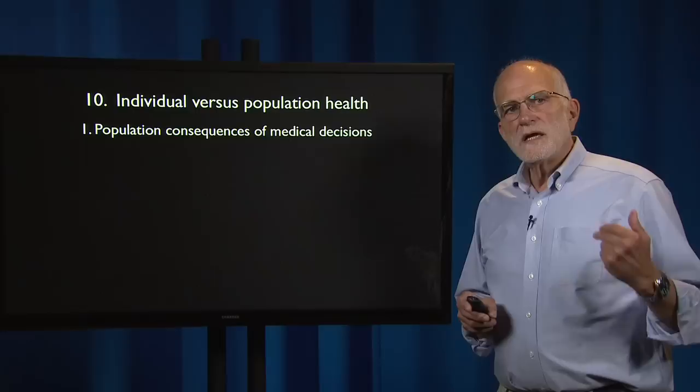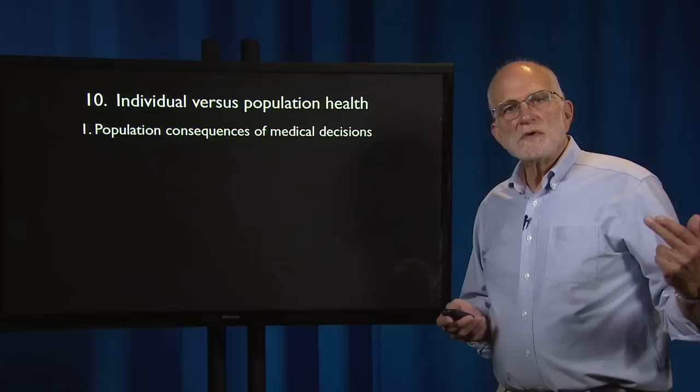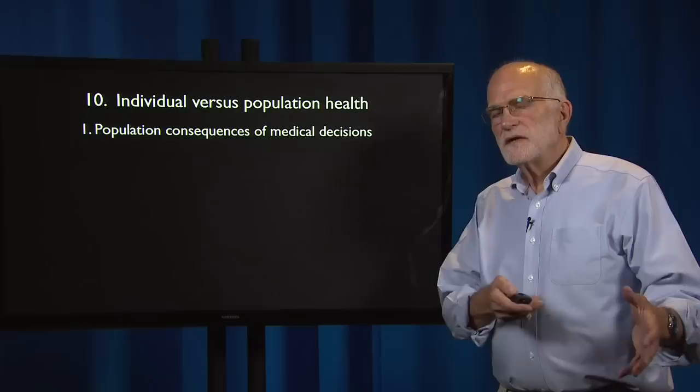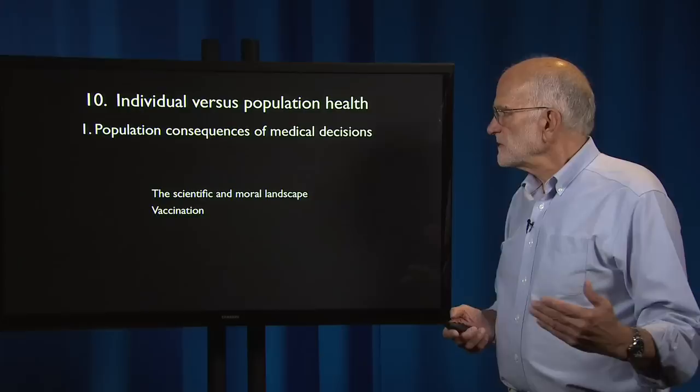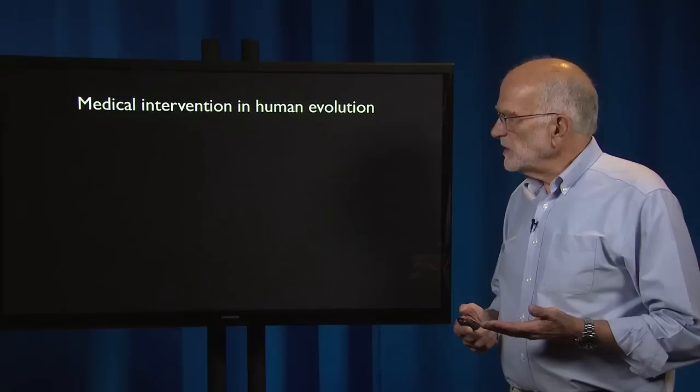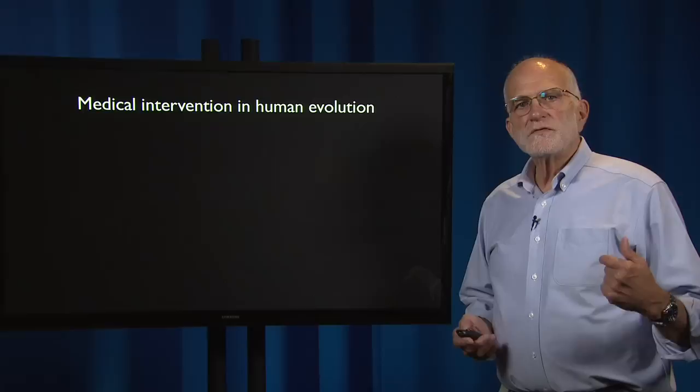Let's now take a look at what happens when hundreds, thousands and millions of people make decisions that have medical consequences and those add up to have impact at the level of the entire population. This exposes the issue of morality and the way that individual behavior impacts public good. We'll explore that with the examples of vaccination and antibiotic therapy. To begin with, let's look first at medical intervention and human evolution.